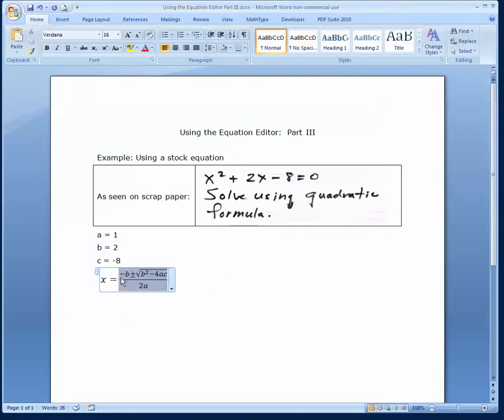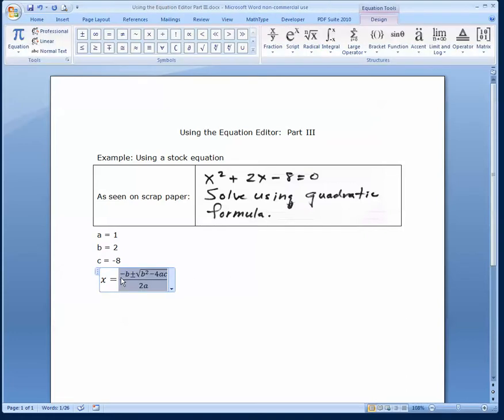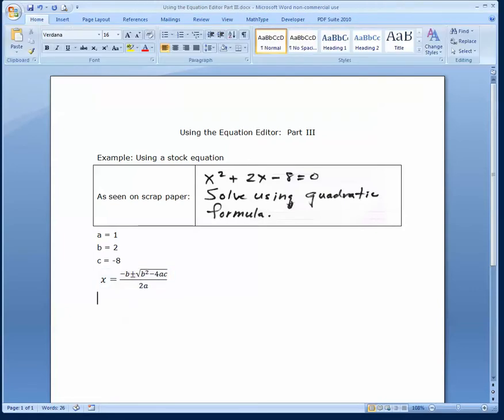Now, the next step is to start filling in the numbers we have. So we tap Control-C after highlighting the equation, start a new line, put in a space, and paste it. Now, I didn't get quite all of it. That should be x equal. That's fine.